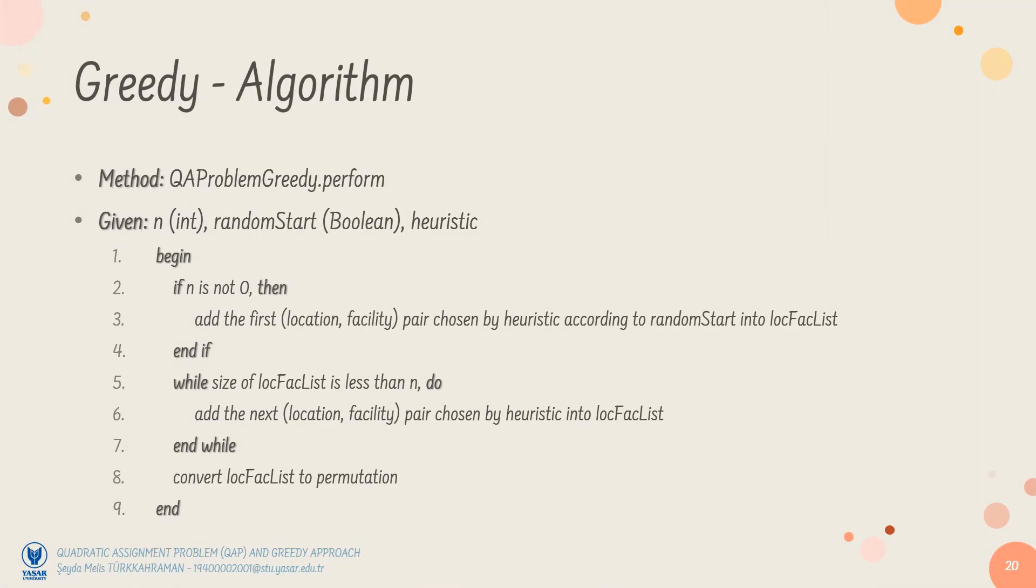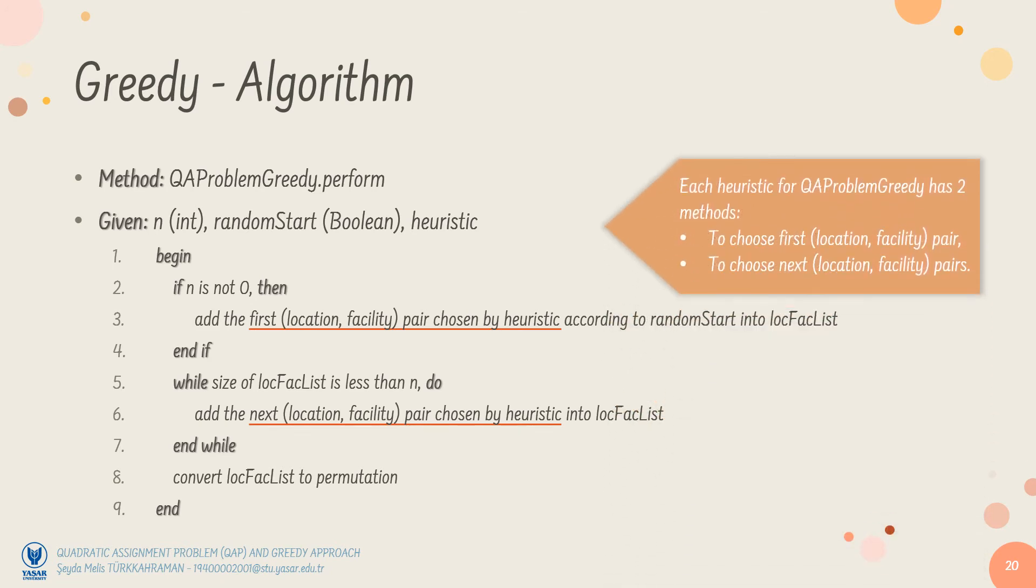Here is the pseudocode of my greedy algorithm for the QAP. If you take a look at it, you will realize the two places where the greedy heuristic is used. So, each greedy heuristic class has two methods. One to choose first location-facility pair. Other to choose next location-facility pairs. Beside these, there is a boolean parameter named randomStart. It is false by default. It means the algorithm is deterministic. If it is set as true, the algorithm turns into greedy heuristic with randomStart.